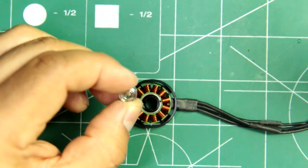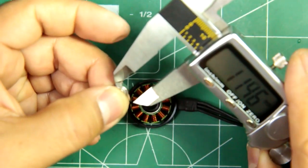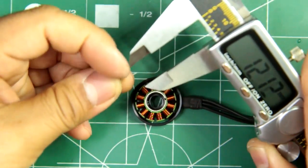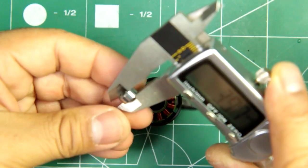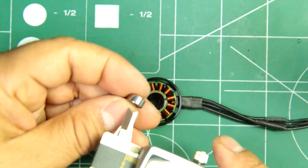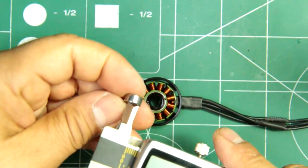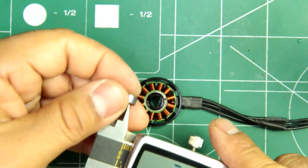And you can buy whatever bearings you want. These are nine by four, the motor shaft is four millimeters.